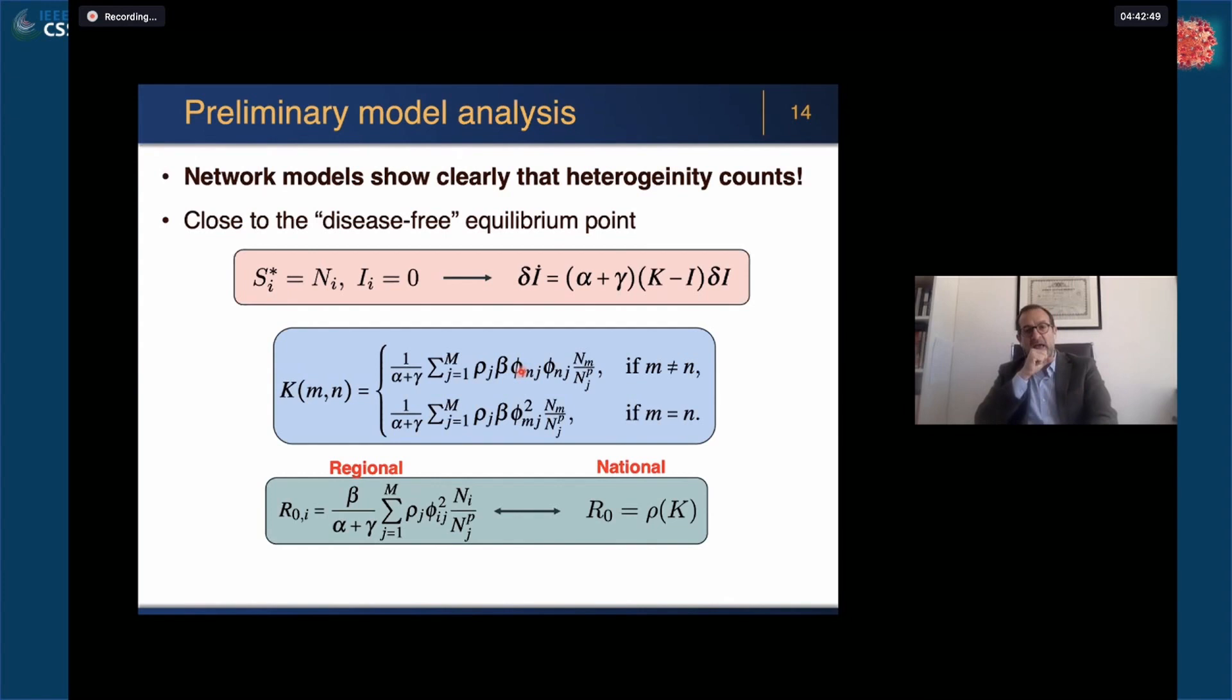You can define two generalized basic reproduction numbers that Thomas mentioned earlier, one at the regional level which also involves the fluxes, and one at the national level. It's very important to notice that the spectral radius of the matrix K is a good indicator, a good proxy for a basic reproduction number typically used in the literature on network models.